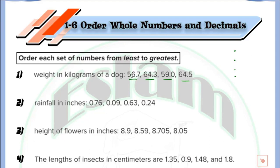Write the first number, which is 56.7, and the second number, which is 64.3. After that, write 59.0. The last one is 64.5.